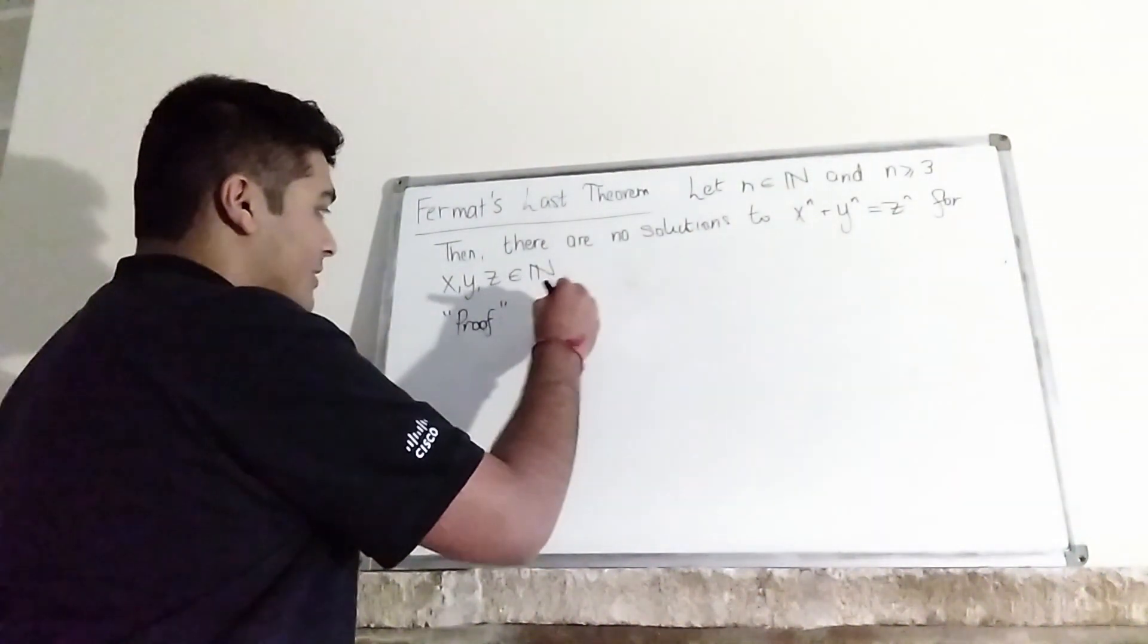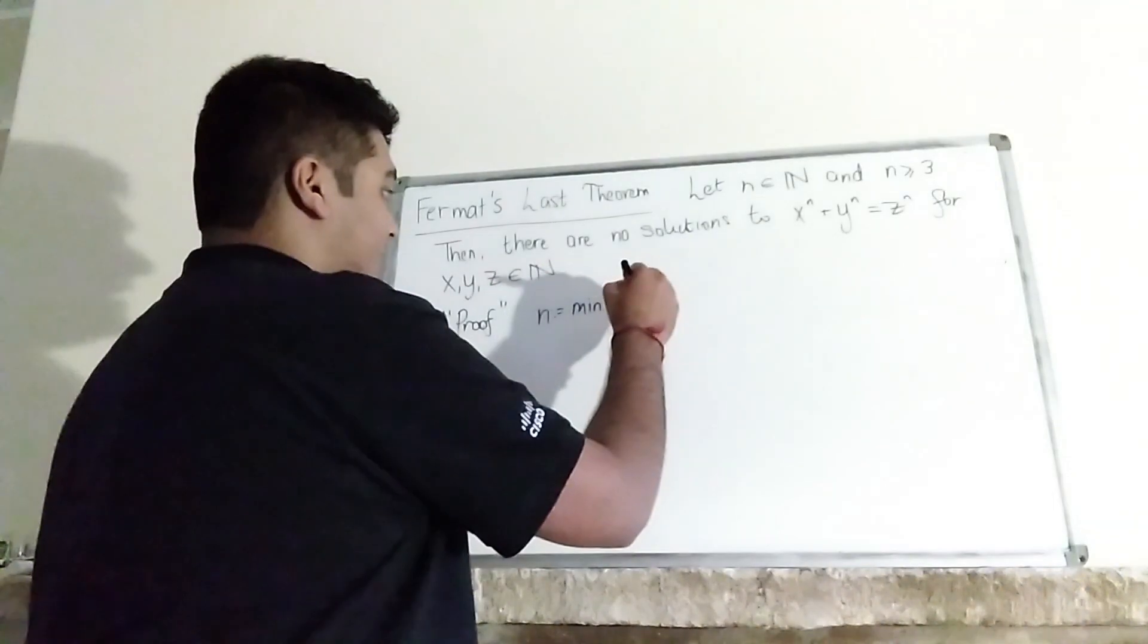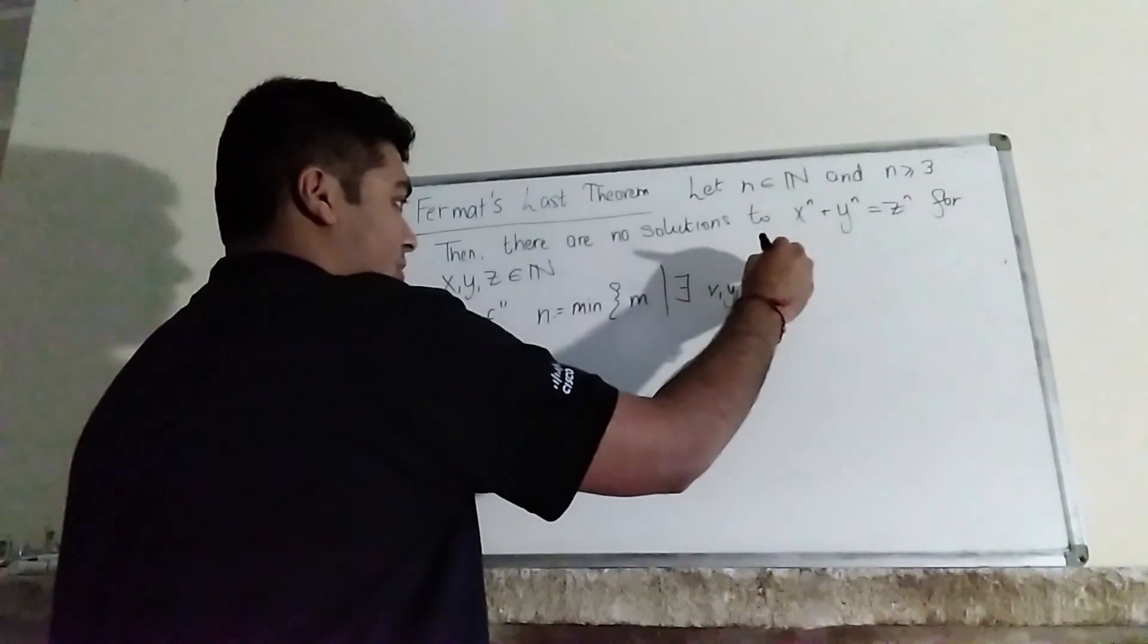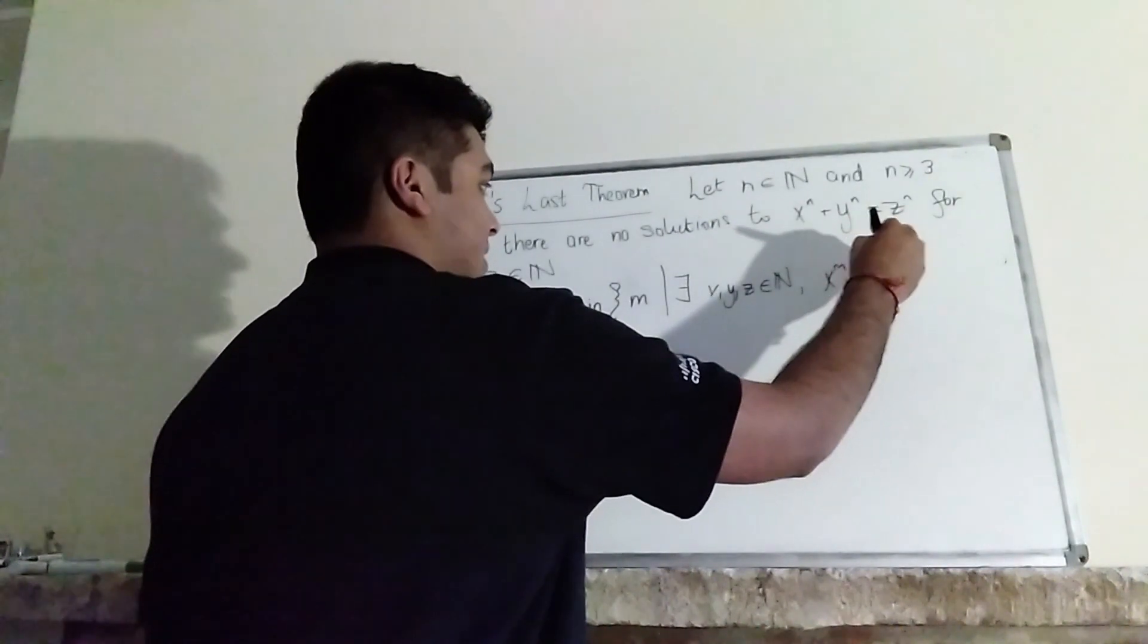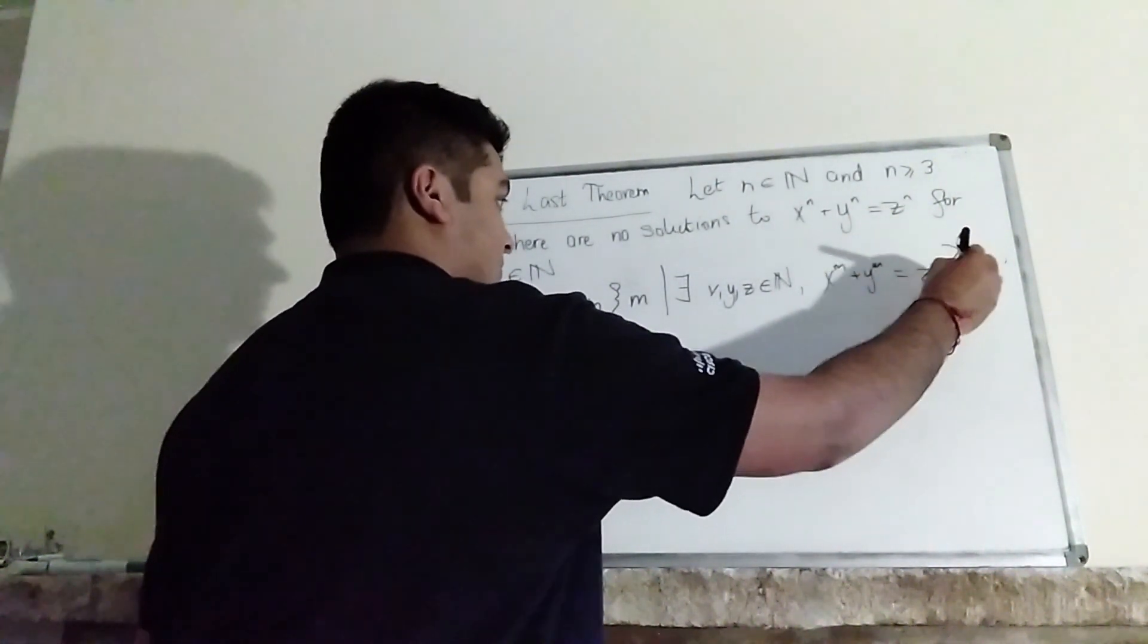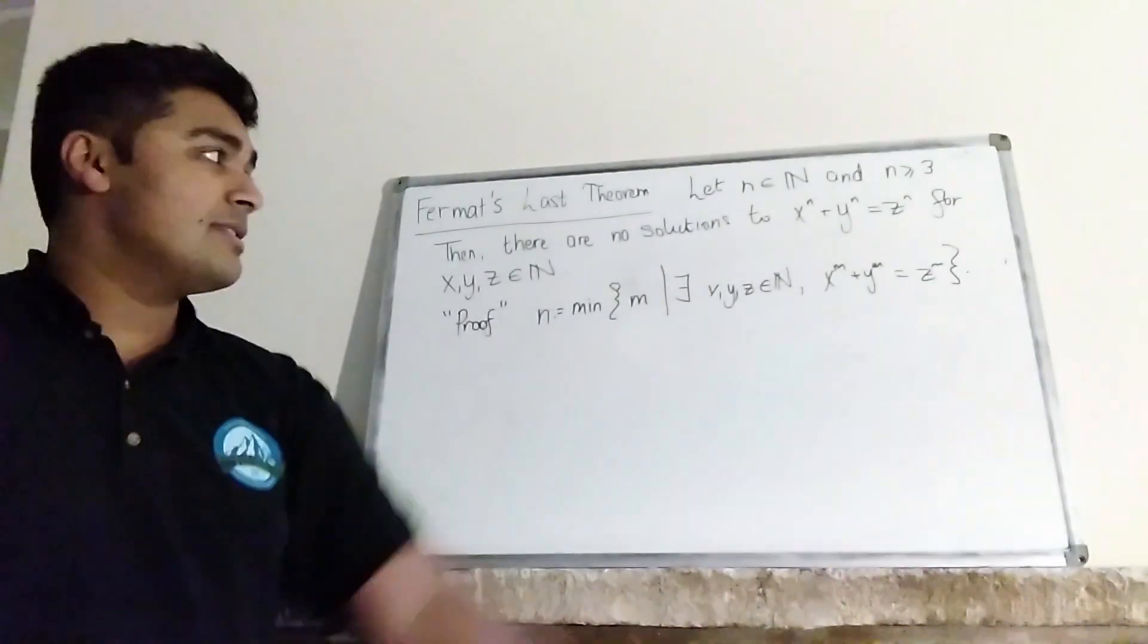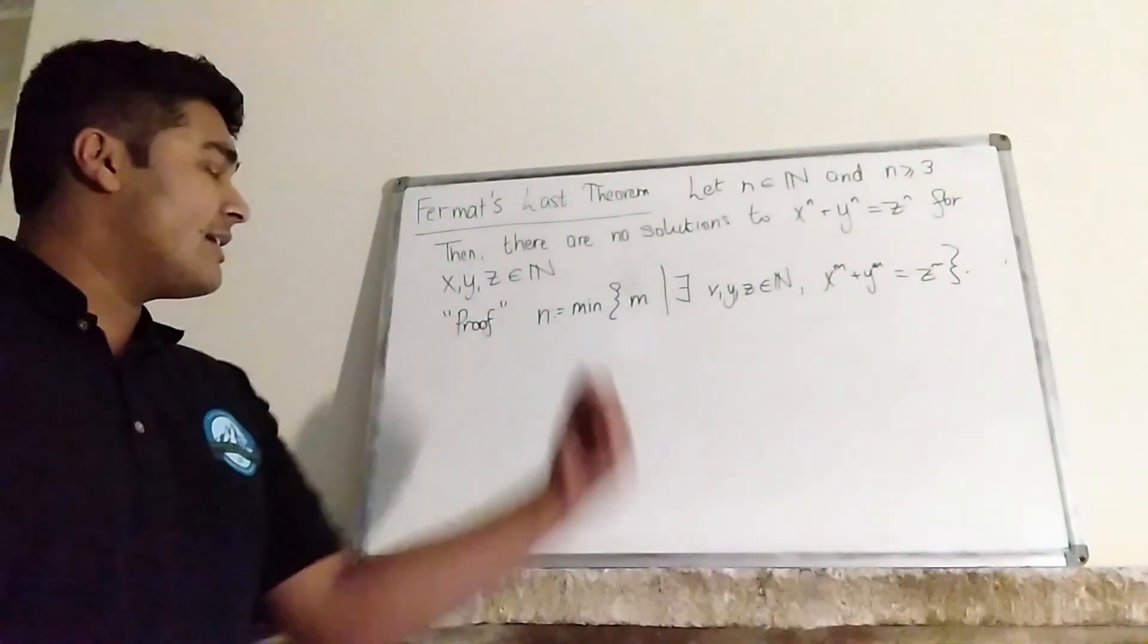Let n be the minimum of the m's for which there exists x, y, z in the natural numbers such that x^n + y^n = z^n. So we're taking the smallest value of n for which there are solutions x, y, and z in the natural numbers to x^n + y^n = z^n.